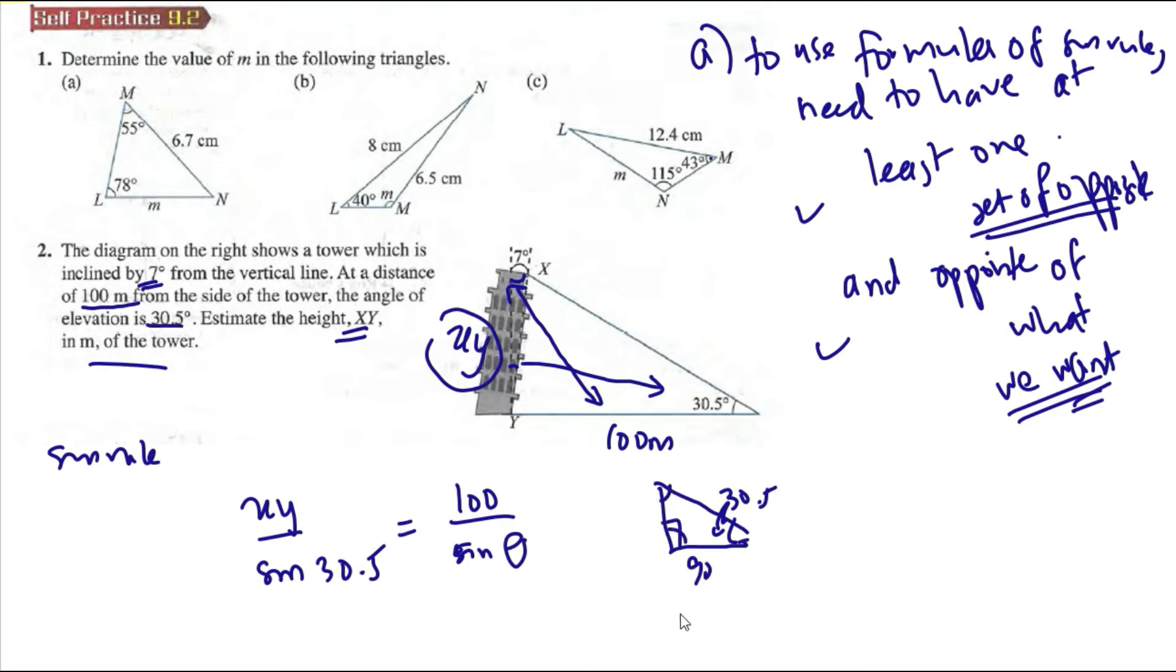So theta is equal to 180 minus 90 minus 30.5, which is equal to 59.5.